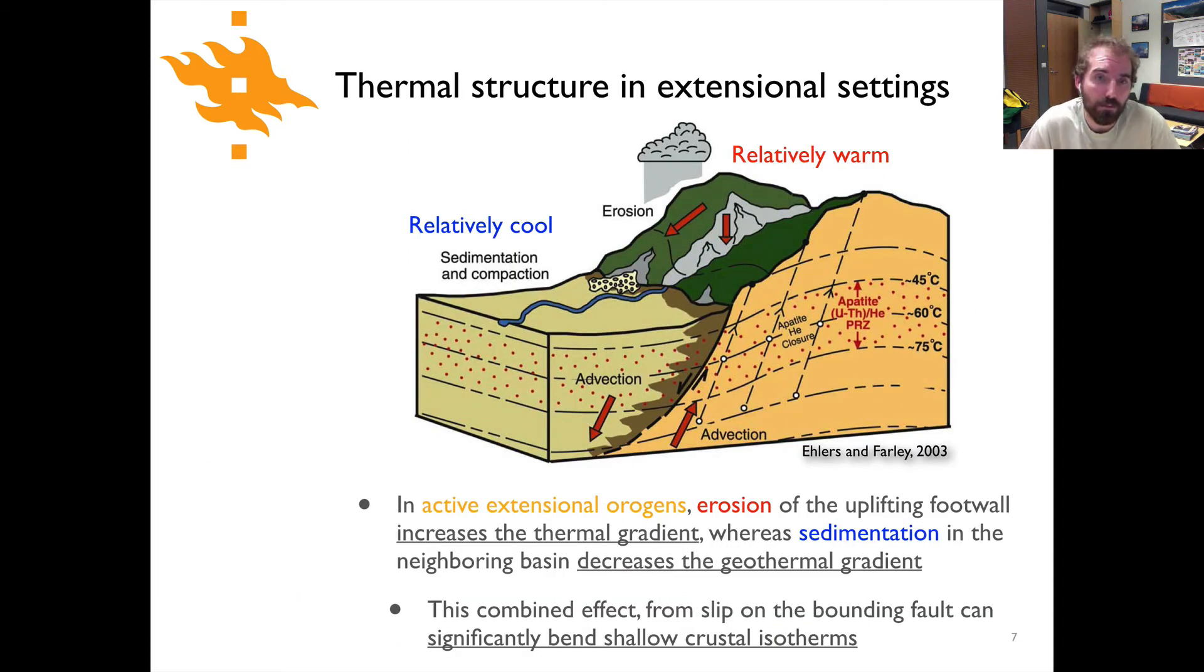When we start looking at more natural examples, things obviously get a little bit more complicated. Here we've got a figure of an active mountain range undergoing extension. We have a normal fault shown here and a sedimentary basin out in front of the mountain range where we have sedimentation and compaction taking place, so temperatures here would be relatively cool. Then we have the footwall of this normal fault where there's uplift of material toward the surface where it's being eroded, so temperatures are relatively warm. When you go across the fault, you essentially have the interface between this relatively cool basin and relatively warm uplifted mountain range.